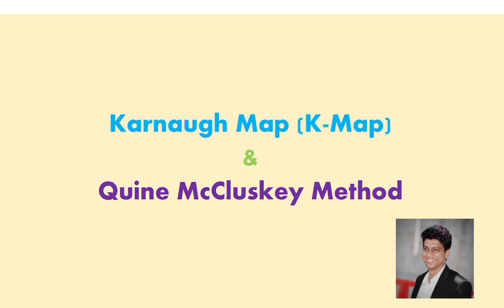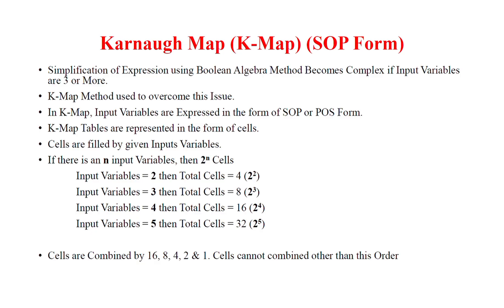Hi everyone. Today we will see about Karnaugh map, shortly pronounced as K-Map, and the Quine-McCluskey method, otherwise known as the tabulation method in digital electronics. If the input variable is more than 3, it becomes very complex to solve using Boolean algebra. To overcome this, we are in need of K-Map.